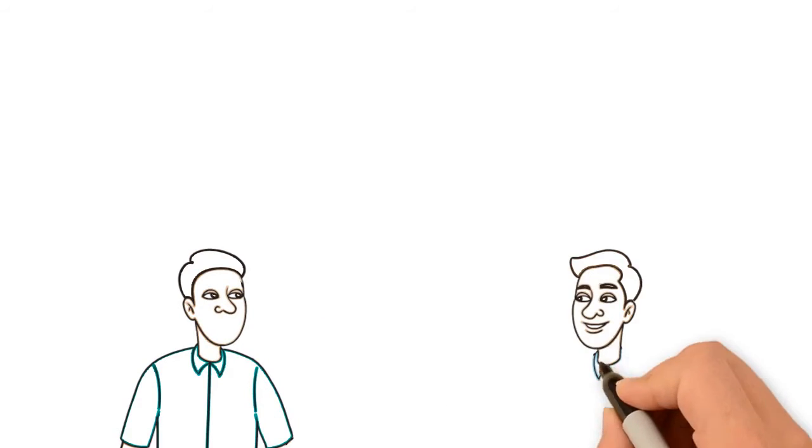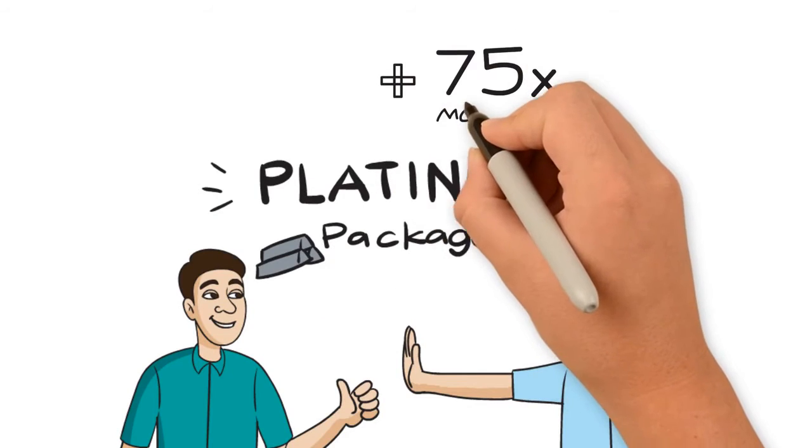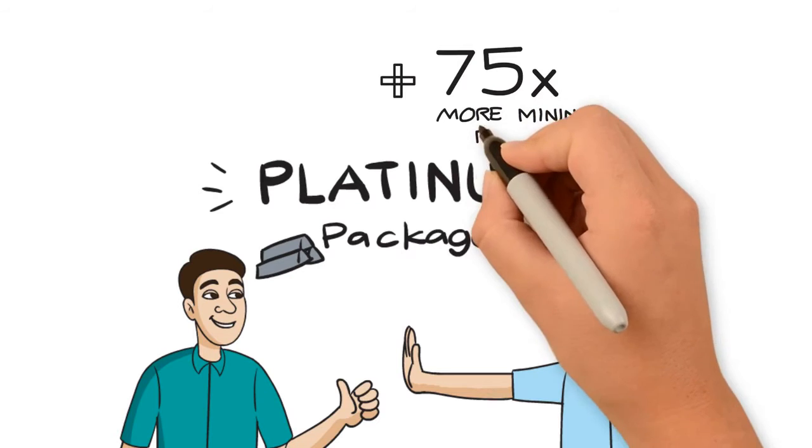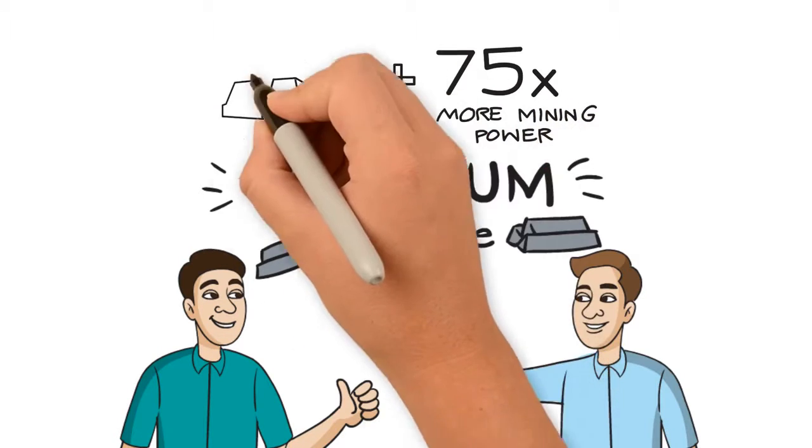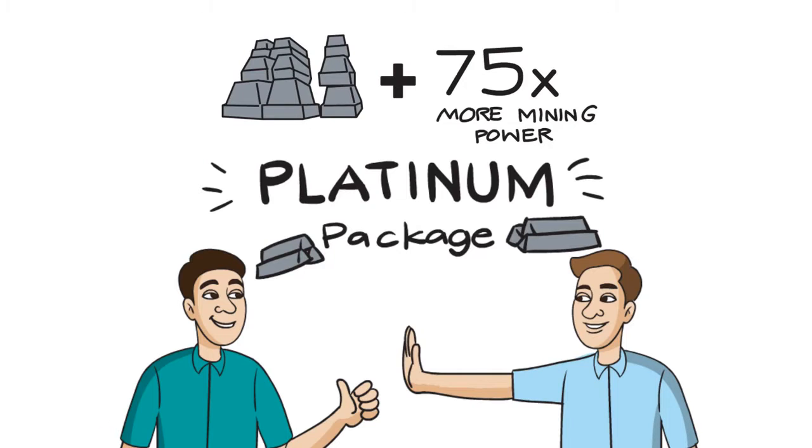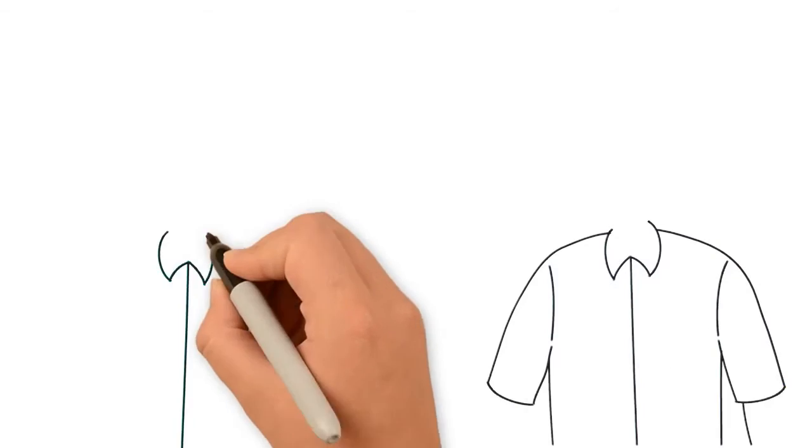That is when Oscar told Tim that if he bought the platinum package, he would increase his return even further as he would have more gold, silver, and 70 times more digital mining power than the original pack, which would greatly compound his daily payout return.